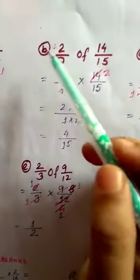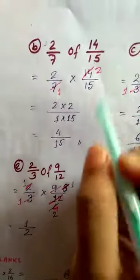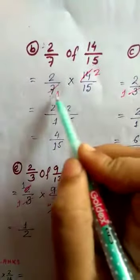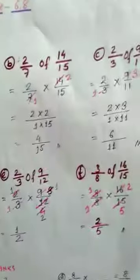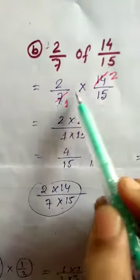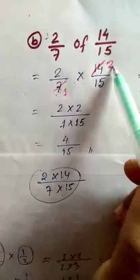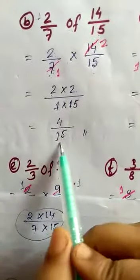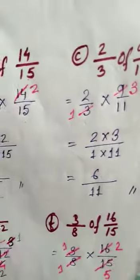Question 1b: 2/7 of 14/15. 'Of' means multiplication, so 2/7 × 14/15. We can cancel 7 and 14 — 7 goes into 7 once and 7 goes into 14 twice. So we have 2×2 in the numerator and 1×15 in the denominator, giving 4/15. Since it is a proper fraction, we cannot convert it to a mixed fraction. The answer is 4/15.